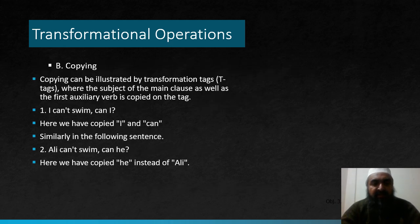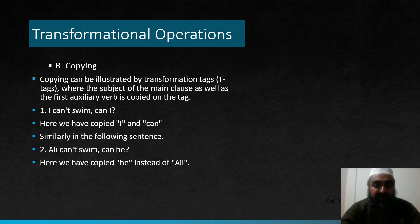The second type of transformational operation is copying, which can be illustrated with tag questions. For example, "I can't swim, can I?" — here the subject "I" and the modal verb "can" are copied at the end of the sentence. These terms are not part of the deep structure. Similarly, "Ali can't swim, can he?" — here we have copied "he" instead of Ali, as well as the modal verb "can." These terms cannot be found in the deep structure or the rough idea underlying these sentences.